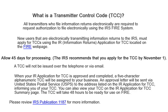What is the transmitter control code? All transmitters who file information returns electronically are required to request authorization to file electronically using the IRS FIRE system. New users that are electronically transmitting information returns to the IRS must apply for transmitter control codes using the Information Returns application located on the FIRE webpage. Allow 45 days for processing. The IRS recommends that you apply for the transmitter control code by November 1. The transmitter control code will not be issued by telephone or email.